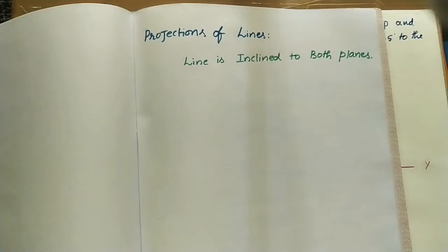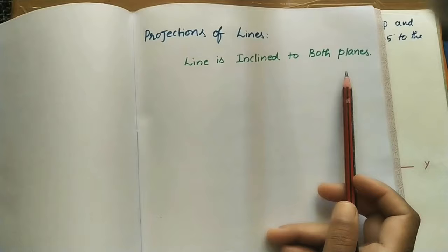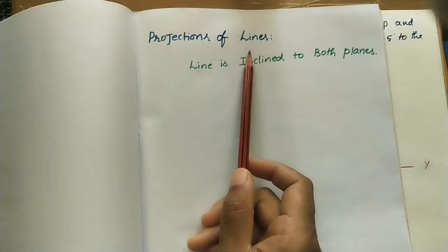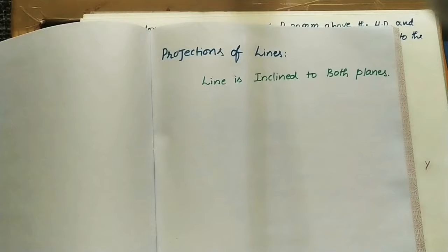Hi friends, welcome to my channel. Today's topic is projections of lines — we are taking a line inclined to both planes, meaning both the horizontal plane and the vertical plane. Projections means the front view and top view of a given line. Before taking the data, I want to explain how the line is positioned when it makes an angle with both the horizontal plane and the vertical plane.